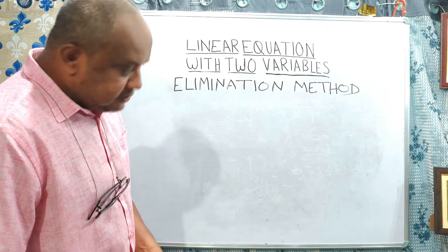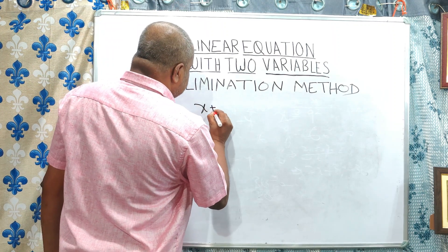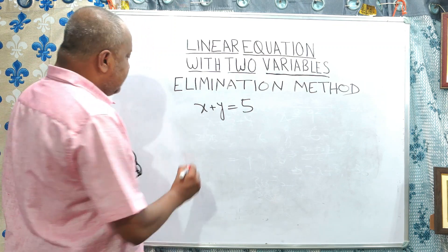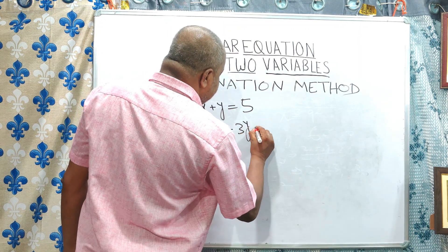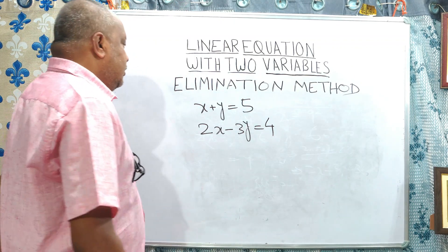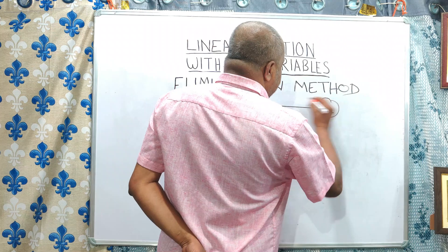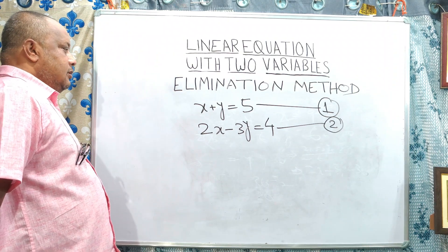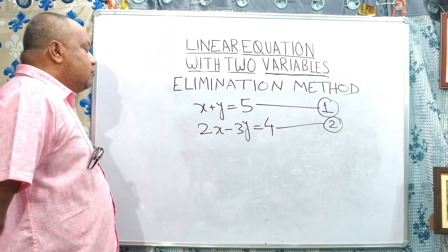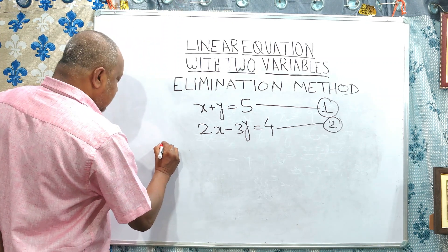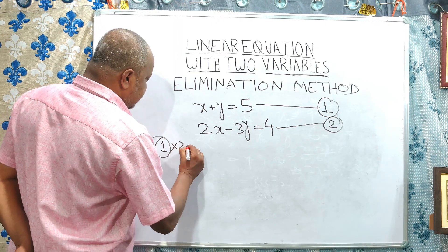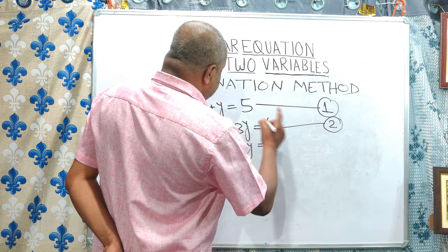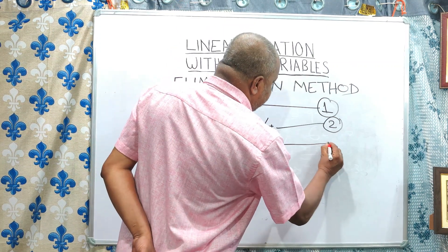Let us consider the equation x plus y is equal to 5. This is the first equation. And 2x minus 2y is equal to 4. If we consider this as equation number 1 and equation number 2, and if we multiply equation number 1 by 2, then the equation becomes 2x plus 2y is equal to 10. So this is equation number 3.